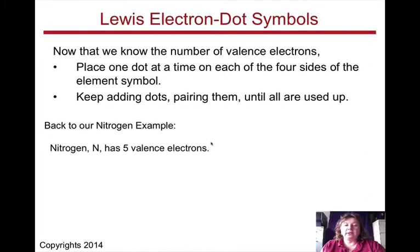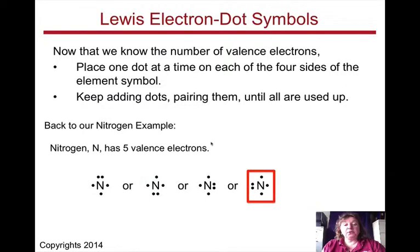So we can go back to our nitrogen example. Nitrogen has five valence electrons, so the possible ways you can organize them are as two on top, two on bottom, two on one side, and two on the other side. And it does not matter which one you use.